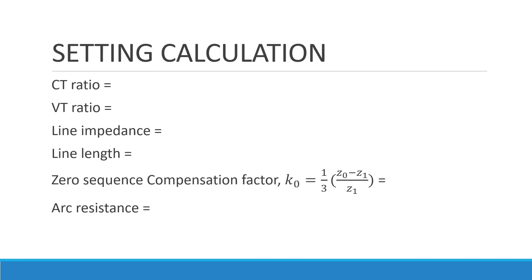To configure a distance relay you need to know the CT ratio, the VT ratio, the line impedance, the line length, and the zero-sequence compensation factor. The zero-sequence compensation factor is used to translate the zero-sequence impedance to the positive sequence. The arc resistance and tower footing resistance are also necessary in the case of a ground fault. Next we will go to ETAP and see how to implement distance relays. If you are interested in knowing more about distance relays, I will attach additional resources with this lecture.